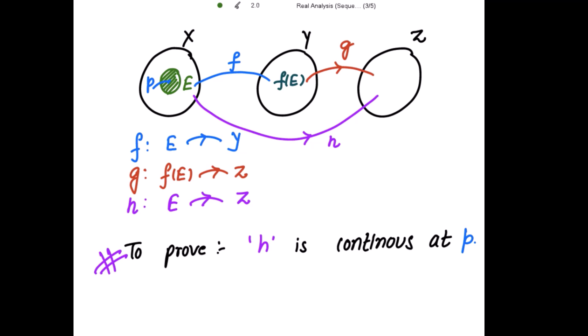So this blue colored f is a mapping from E to y and image of f in y as f(E), which is mapped by g into z and h is a mapping from this E to z. So to prove h is continuous at p.